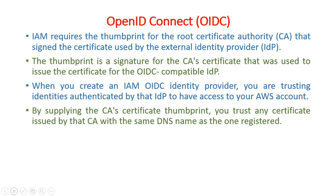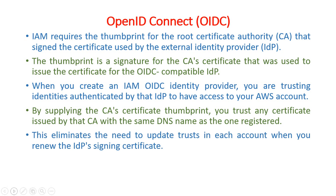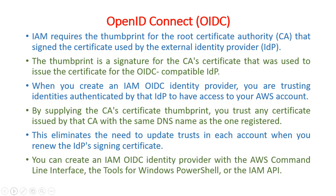By supplying a CA certificate thumbprint, you trust any certificate issued by that CA with the same DNS name as registered. The Certificate Authority is a centralized authority that provides a trusted thumbprint. When you use any services, the same trusted verification can be requested using the thumbprint from IAM, which the CA Certificate Authority provides as a trusted party. This eliminates the need to update trust in each account when you renew the IdP signing certificate.